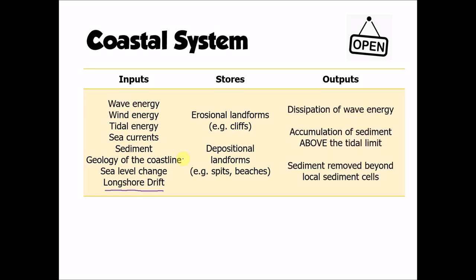The outputs of sediment or energy can occur through the dissipation of wave energy — when a wave crashes onto a beach, that energy is transferred from the sea to the land and lost from the coastal system. We can also lose sediment if it accumulates on the beach and is blown inland above the tidal limit, or if sediment is moved from one sediment cell to the next. Sediment cells are similar to drainage basins of the coastline — areas we can use to divide up our coastline.